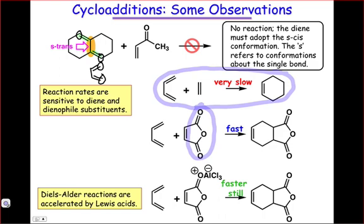And in fact, if we add a Lewis acid to the dienophile to pull even more electrons away from that double bond, the reaction is faster still. So this suggests that polarizing the substituents has an effect on the reaction rate.